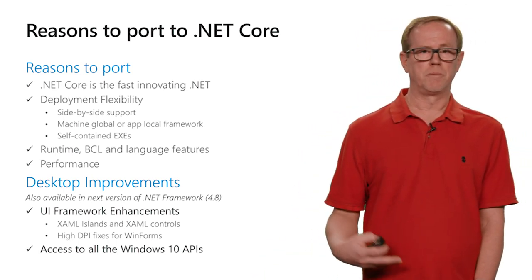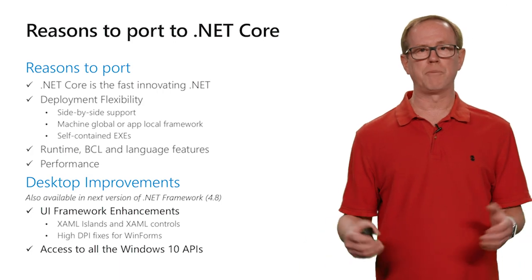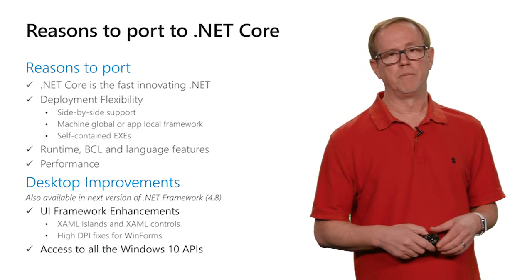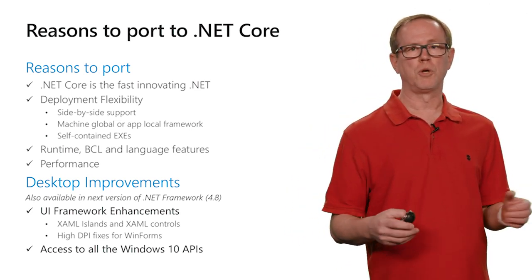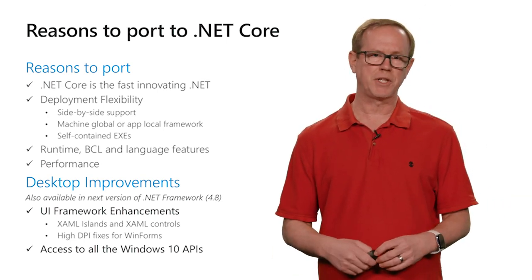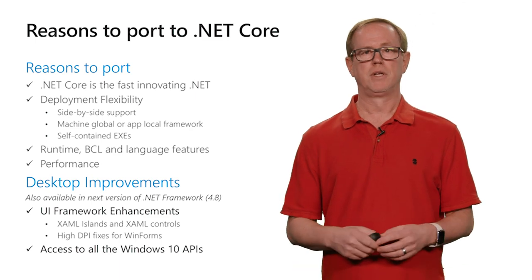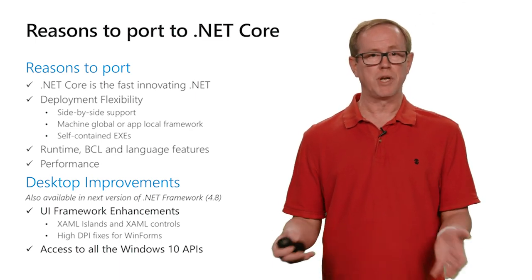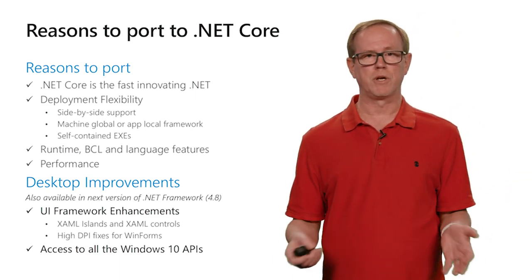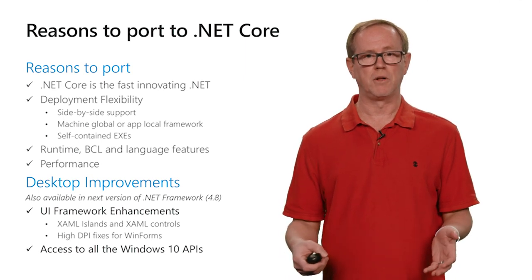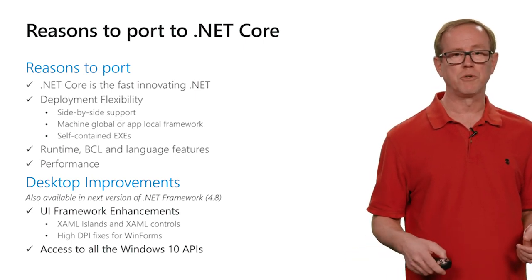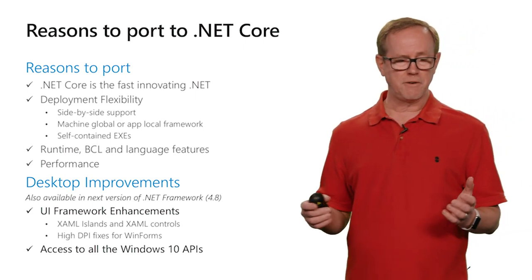The second thing is the BCL — the base class libraries in .NET that make everything work. Because .NET Framework is installed globally on billions of machines, we can't really change much of the BCL there; even a slight change might break applications. But in .NET Core, we're able to do that because you can opt in when you want the next version. Because of this, we've been able to optimize many BCL features — they're much faster. Just by moving your application to .NET Core, you're likely to see a 20 or 30 percent improvement in performance because of these API improvements.